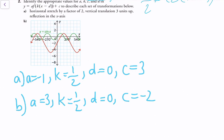For part b, a equals 3, indicating a vertical stretch by a factor of 3 — you can see a change in the height of the new function compared to the parent function. k equals 1 over 2, meaning there's a horizontal stretch by a factor of 2. d equals 0, so there's no horizontal translation occurring. And c equals negative 2, meaning the entire function is brought down 2 units.